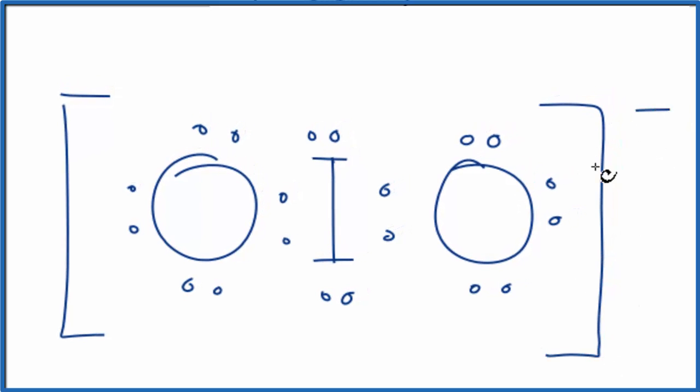But this is not the best Lewis structure for the iodite ion. The reason is, if we look at the formal charges, this oxygen is -1, same over here, and the iodine in the center is +1.